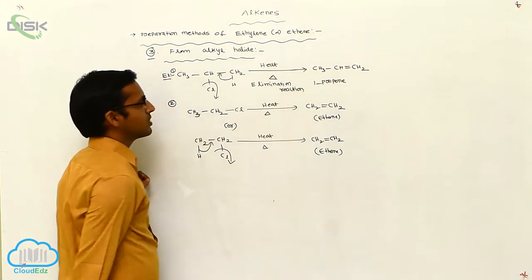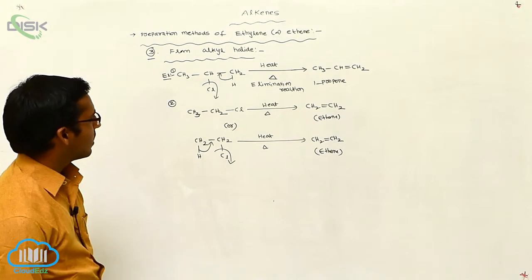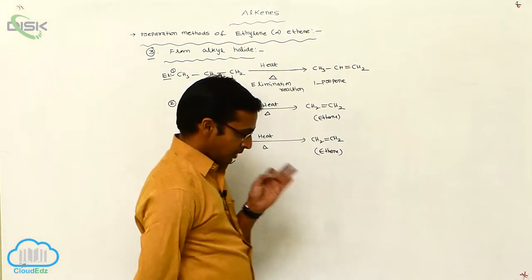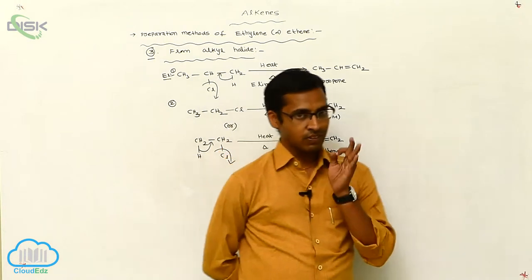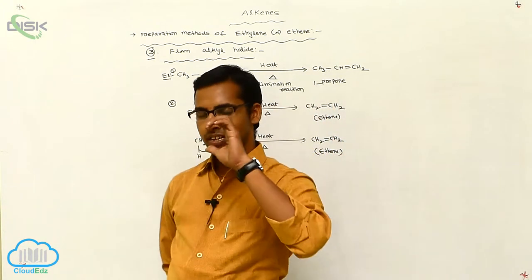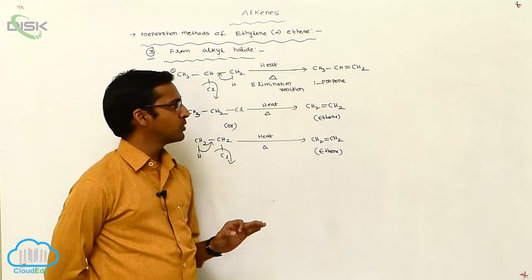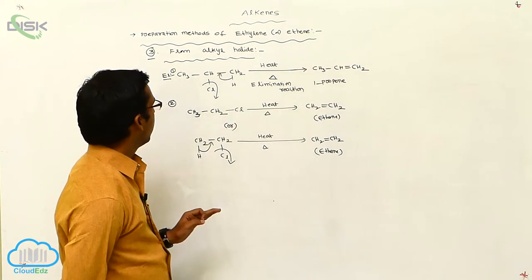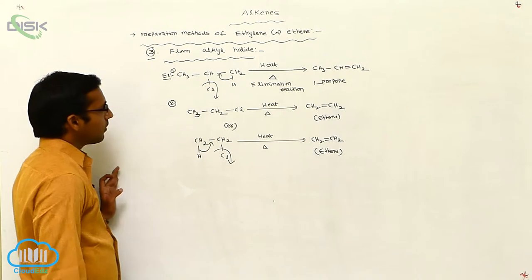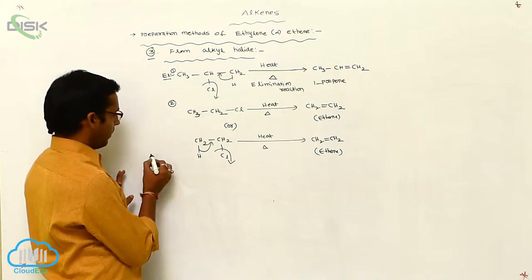Through elimination reaction, it gives this product. The eliminating groups are always trans to each other. The eliminating group is at the beta position — at alpha and beta positions. That is the important point.